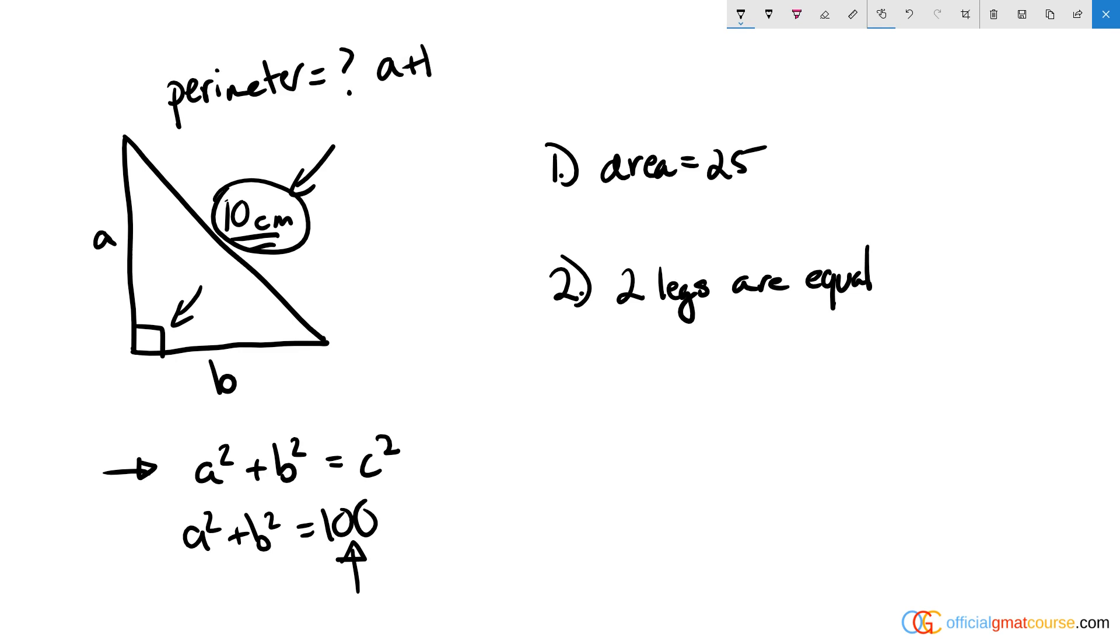Now the perimeter is going to equal a + b + 10, so we don't need to get a or b by themselves—we need to get a + b. If we can get them by themselves that's great, but it might be overkill, and we need to be aware of that as we're going through each of these answer choices.